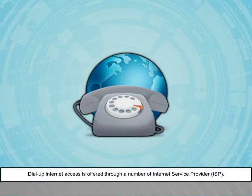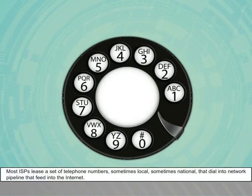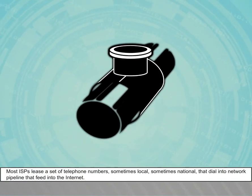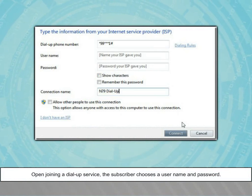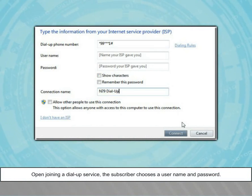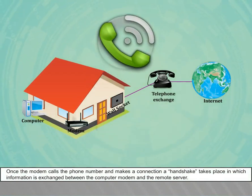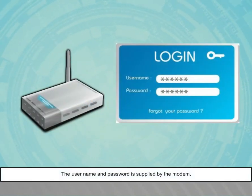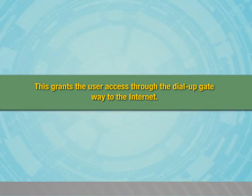Dial-up internet access is offered through a number of internet service providers (ISPs). Most ISPs lease a set of telephone numbers, sometimes local, sometimes national, that dial into network pipelines feeding into the internet. Upon joining a dial-up service, the subscriber chooses a username and password. Once the modem calls the phone number and makes a connection, a handshake takes place in which information is exchanged between the computer modem and the remote server. The username and password are supplied by the modem, granting the user access through the dial-up gateway to the internet.